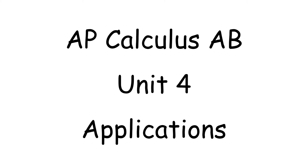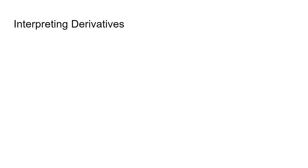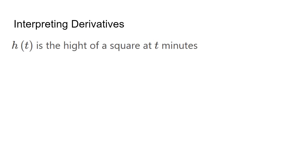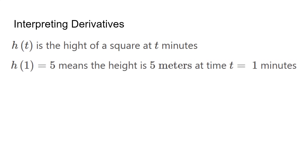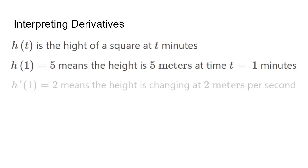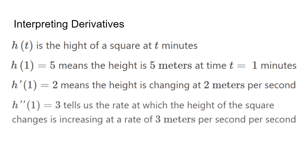First is interpreting the meaning of a derivative. If the function h represents the height of a square in meters at t minutes, h(1) = 5 means that at time 1 minute the height is 5 meters. h'= 2 tells us that the height of the square is changing by 2 meters per second at time t equals 1. h'' = 3 tells us that the rate at which the height of the square changes is increasing at a rate of 3 meters per second per second.